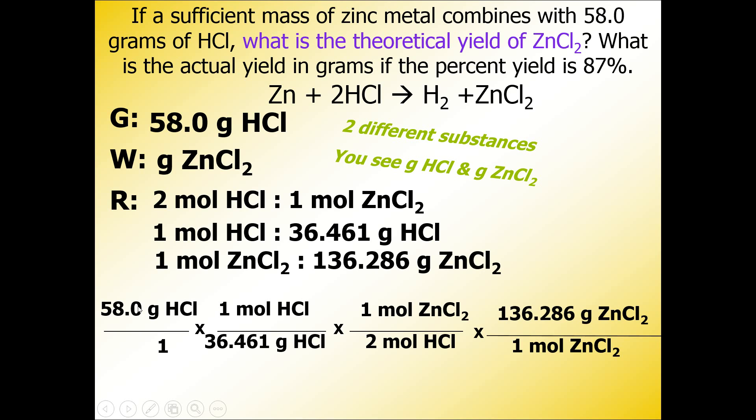This time I'm going to tell you how to multiply all the numbers in the top and divide by all the numbers in the bottom. I always skip the ones because mathematically if you multiply or divide by one, it doesn't change your answer. So we're going to do 58 times 136.286 divided by 36.461 divided by 2, and we get a theoretical yield of 108 grams of zinc chloride.